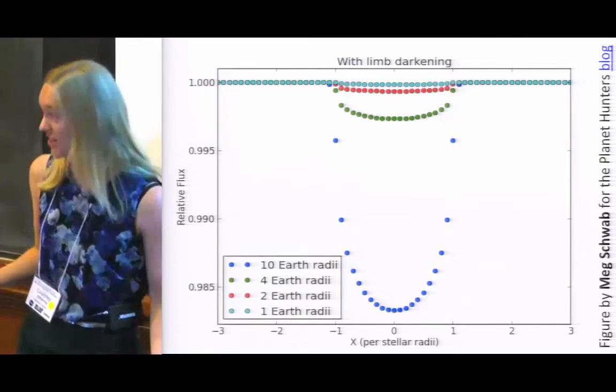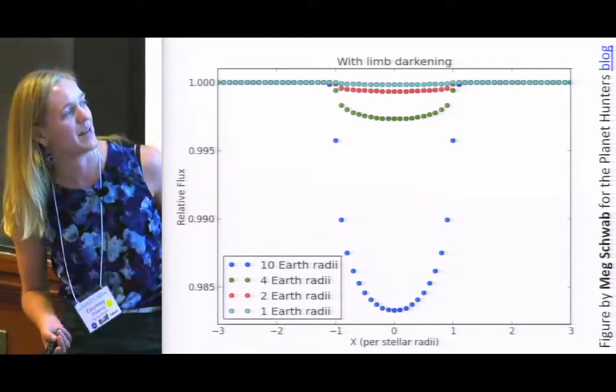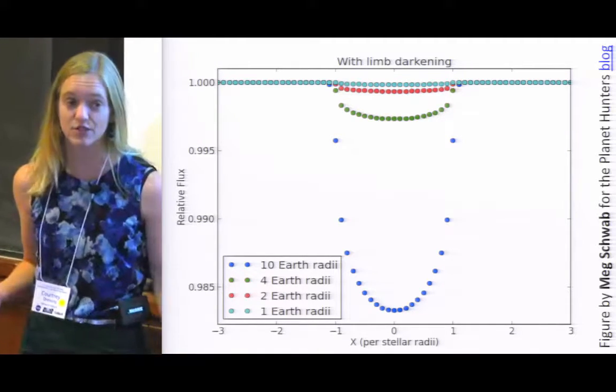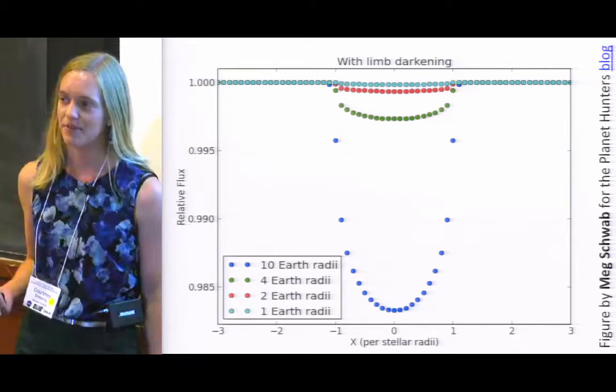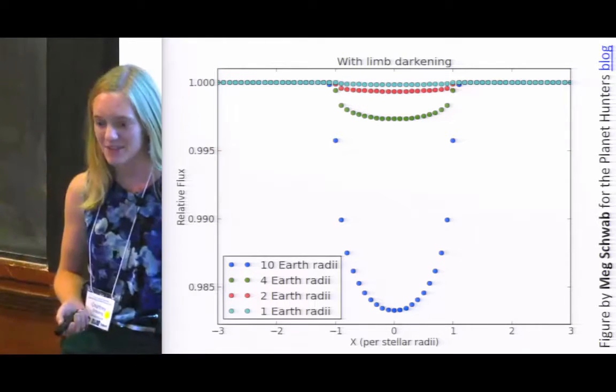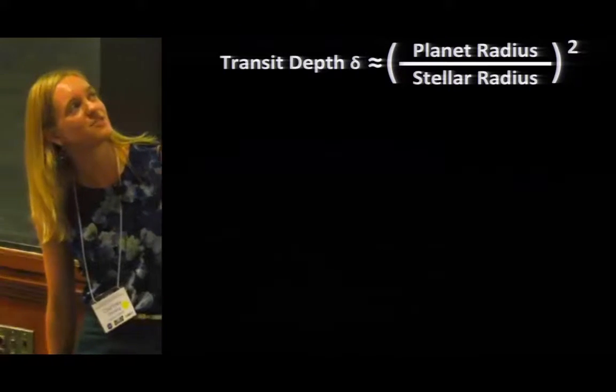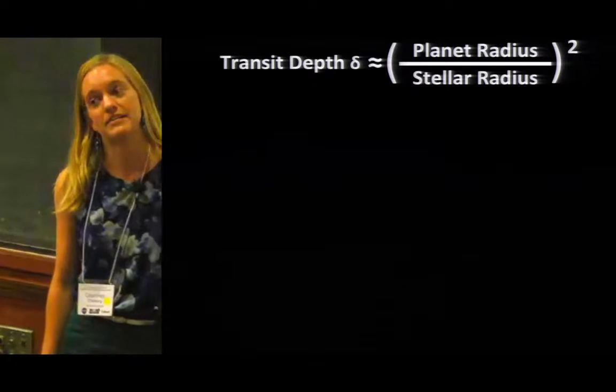So as you're fitting your data, there's a bit of a degeneracy between the planet's size, the impact parameter, and your limb darkening assumptions. And of course, you could throw in star spots, and then you might have little bumps in the bottom as well. So in an ideal case, you should really think about limb darkening. But for now, we're going to go back to our simplistic assumptions, and assume that transit depth is just planet radius over stellar radius squared.